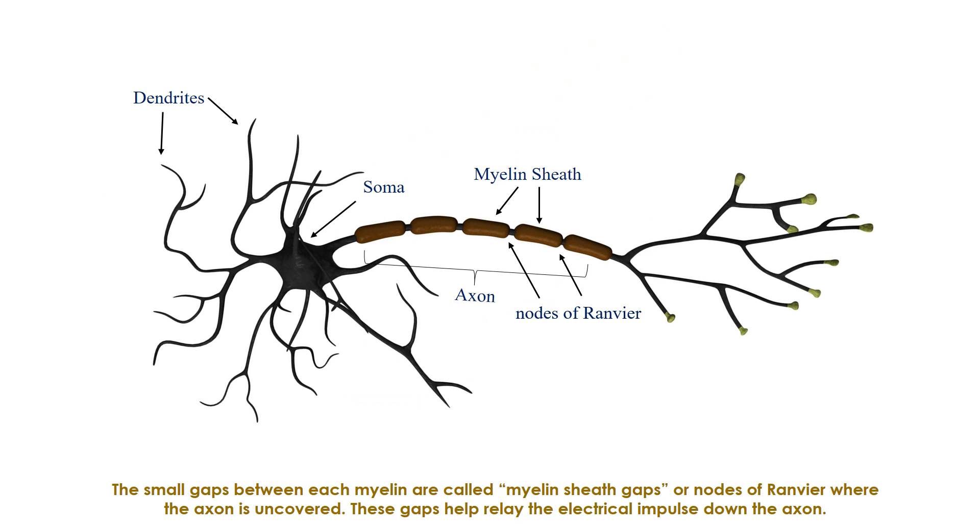The small gaps between each myelin are called myelin sheath gaps, or nodes of Ranvier, where the axon is uncovered. These gaps help relay the electrical impulse down the axon.